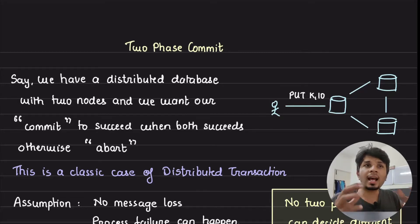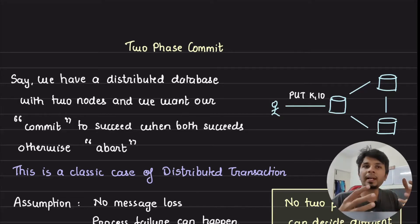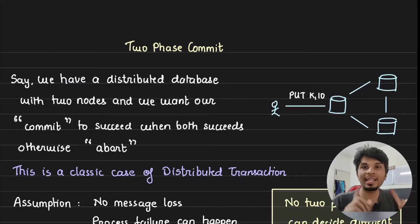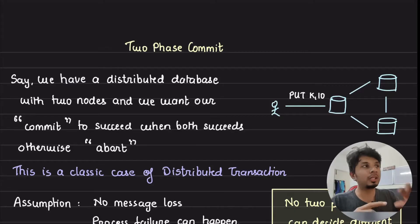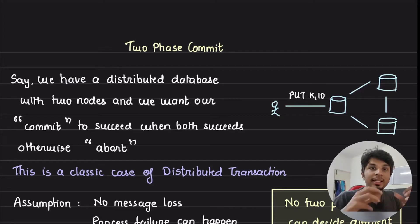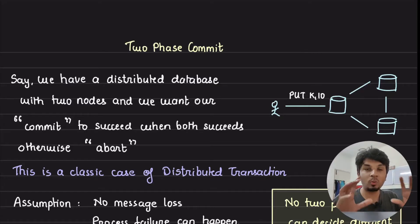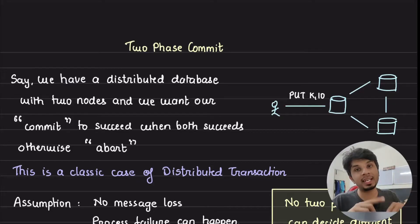Distributed transactions are the heart and soul of distributed systems, and getting all the participating nodes to agree to either commit or abort a distributed transaction is not an easy job. In this video we talk about the two-phase commit protocol that takes baby steps to ensure that all the nodes either commit or abort while ensuring the data never goes into an inconsistent state.